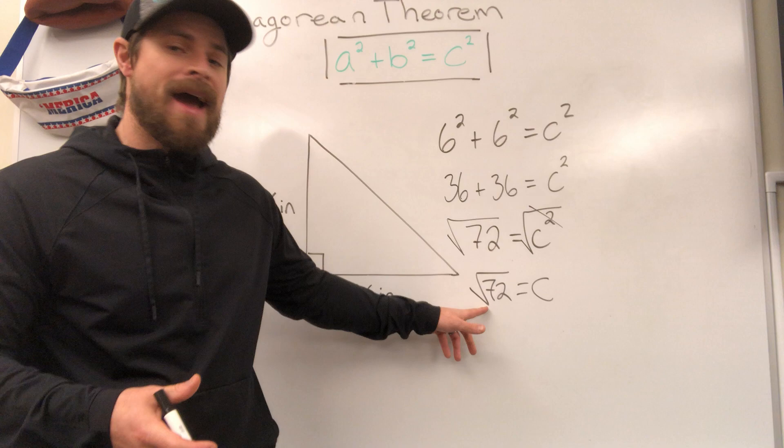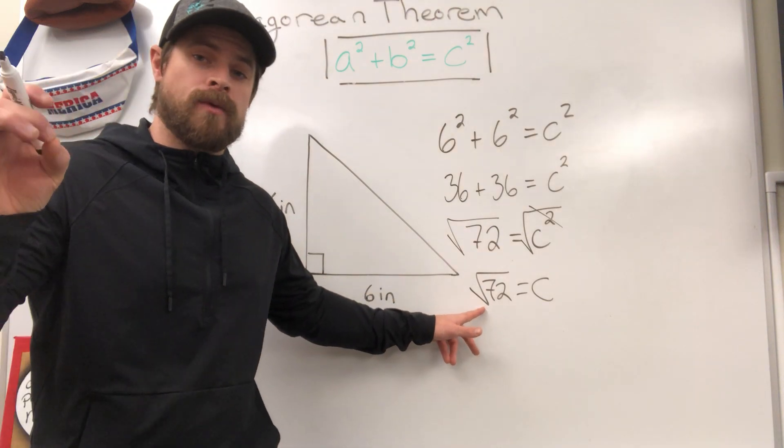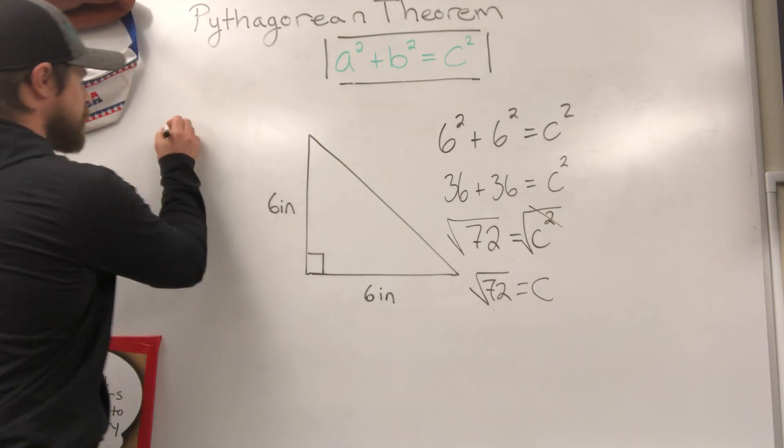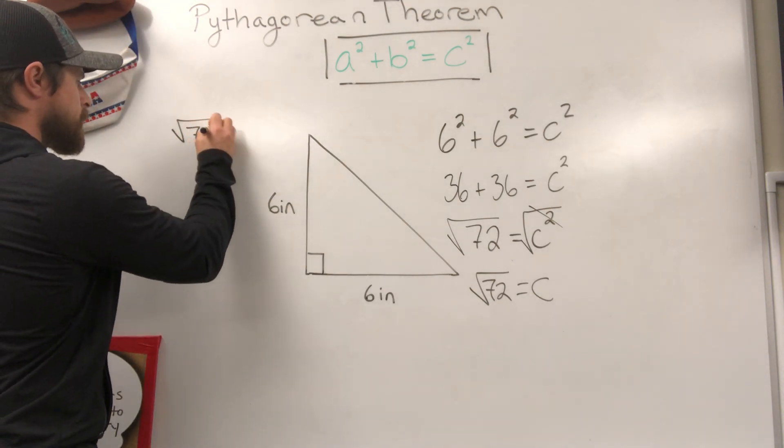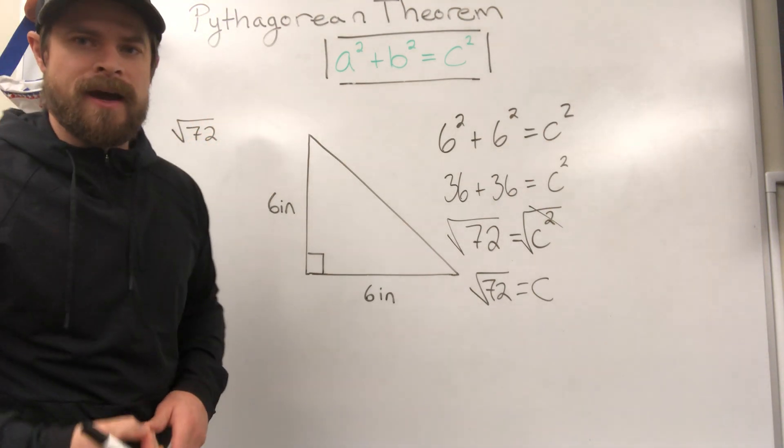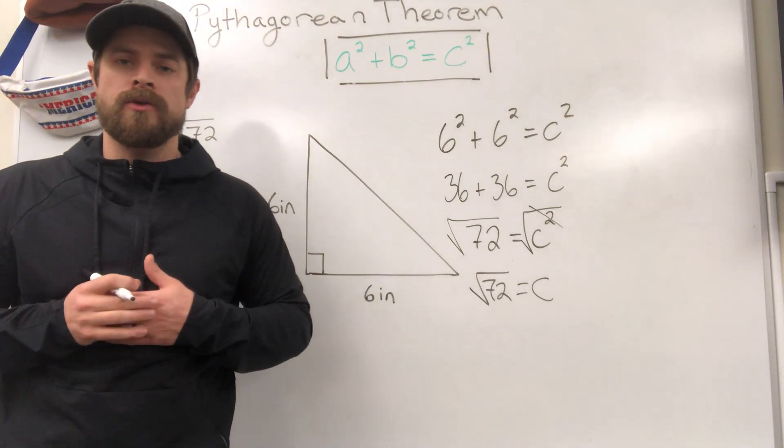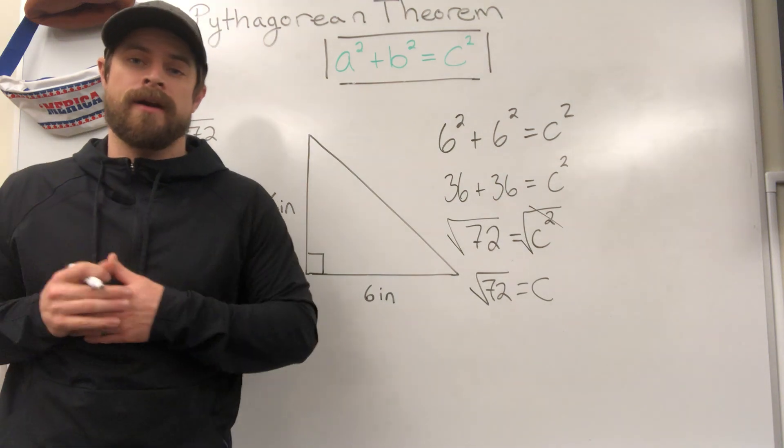meaning you need to take that radical, which is not a perfect square, and you need to simplify it. So what you're going to want to do is write that over here, square root of 72, and you need to now start thinking about what are two numbers that multiply together to make 72, and hopefully what you get in there is a perfect square.